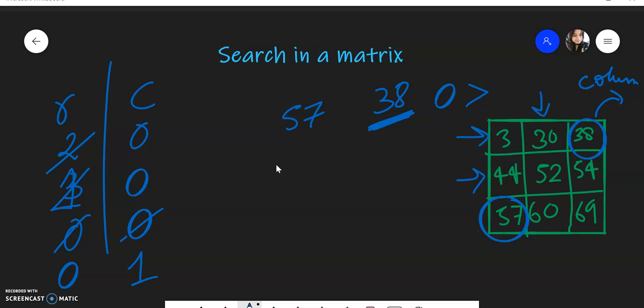Again, this number is greater, right? So our row will be zero and column will become two. Finally, we are here and the matching happens. Because this element is equal, we return true.